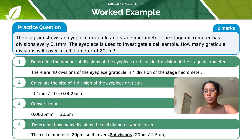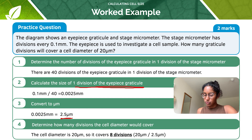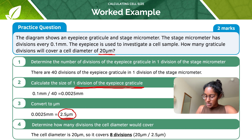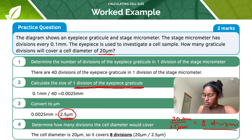So 2.5 micrometres is the size of one division of the eyepiece graticule. We then determine how many of these divisions fit into a cell diameter of 20 micrometres: 20 micrometres divided by 2.5 micrometres equals eight divisions. And that's how I arrived at the answer.